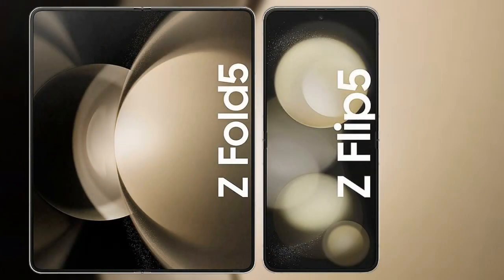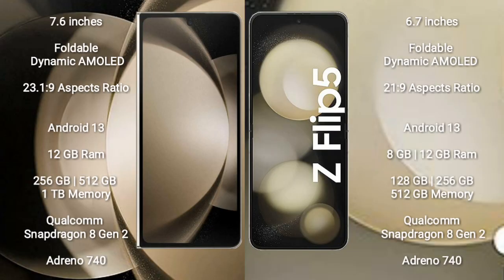I will compare the new Samsung Galaxy Z Fold 5 with Samsung Galaxy Z Flip 5. The Samsung Galaxy Z Fold 5 comes with a 7.6-inch foldable dynamic AMOLED display with an aspect ratio of 23.1:9. The Samsung Galaxy Z Flip 5 comes with a 6.7-inch foldable dynamic AMOLED display with an aspect ratio of 22:9.